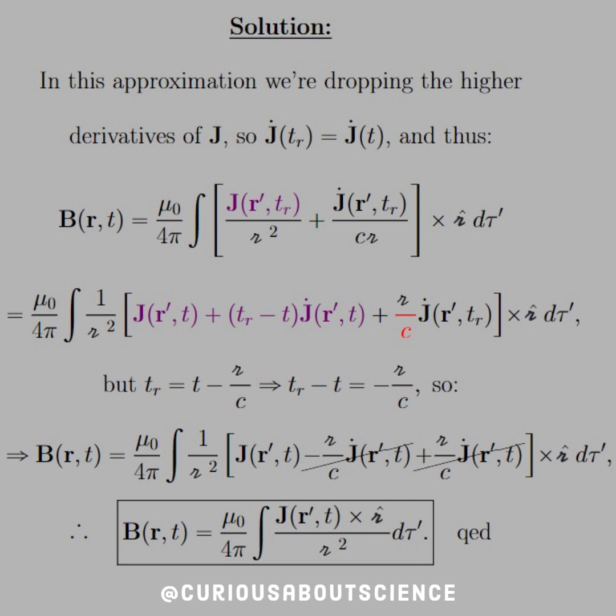And the J̇ in the purple times the t_r - t goes to -R/c times J̇, and wonderfully enough, they cancel, and we're left with exactly what we wanted.